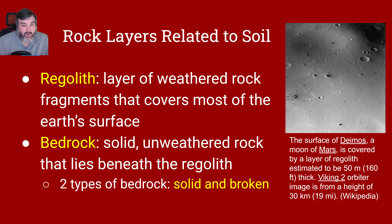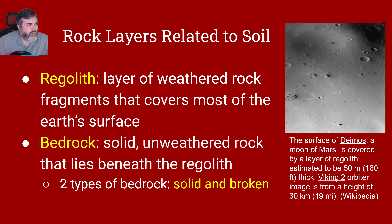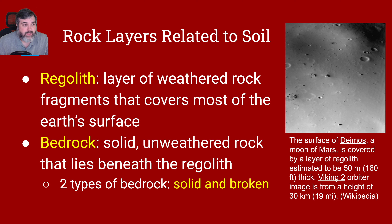So how is soil formed? Rock layers related to soil — we have regolith. Regolith is a layer of weathered rock that covers most of the Earth's surface. I couldn't find a very good picture of regolith on the planet, so here's one of Deimos, which is a moon of Mars. It's covered by a layer of regolith estimated to be 50 meters thick. It's just your generic rock, for lack of a better term.